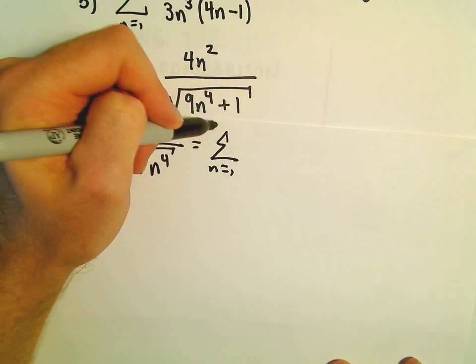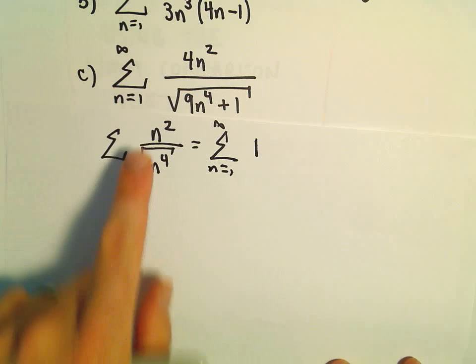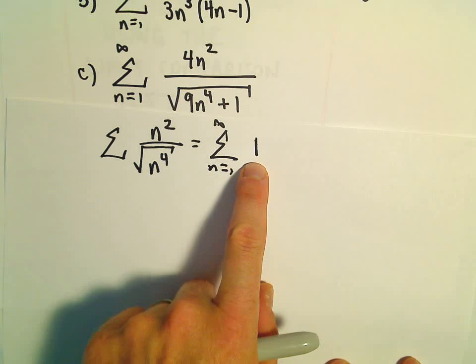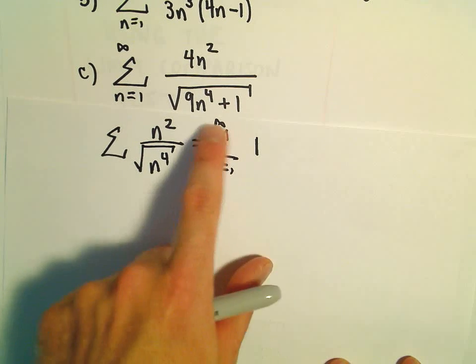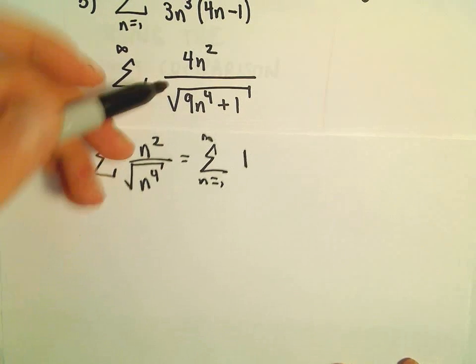So really, if you simplify this down, n squared over n to the 4th is just going to equal 1. Well, if you sum from 1 to infinity of 1, that's definitely divergent.